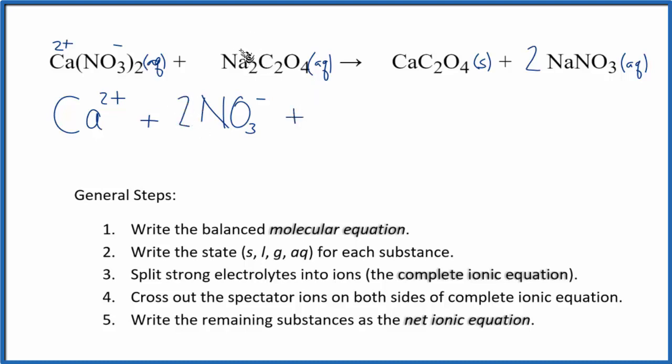For the sodium group one, so it has a one plus charge, and the oxalate ion, that's two minus. So I have Na+, and I have two of those. So I have my Na+, and then I have just my one oxalate ion, C2O4 2-.